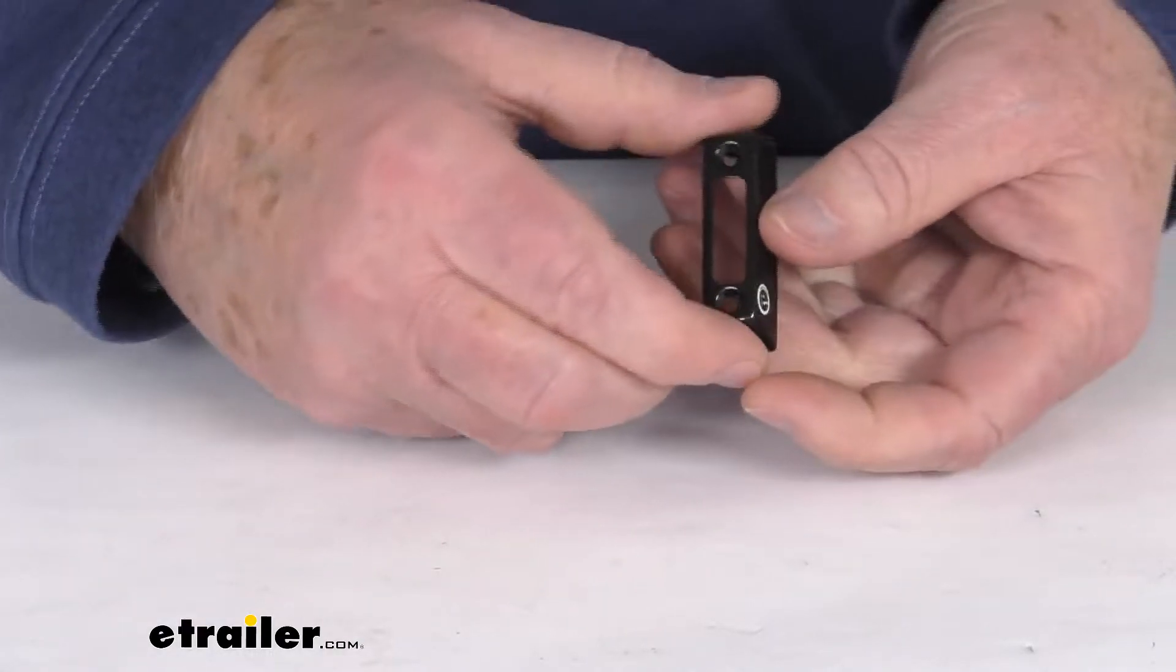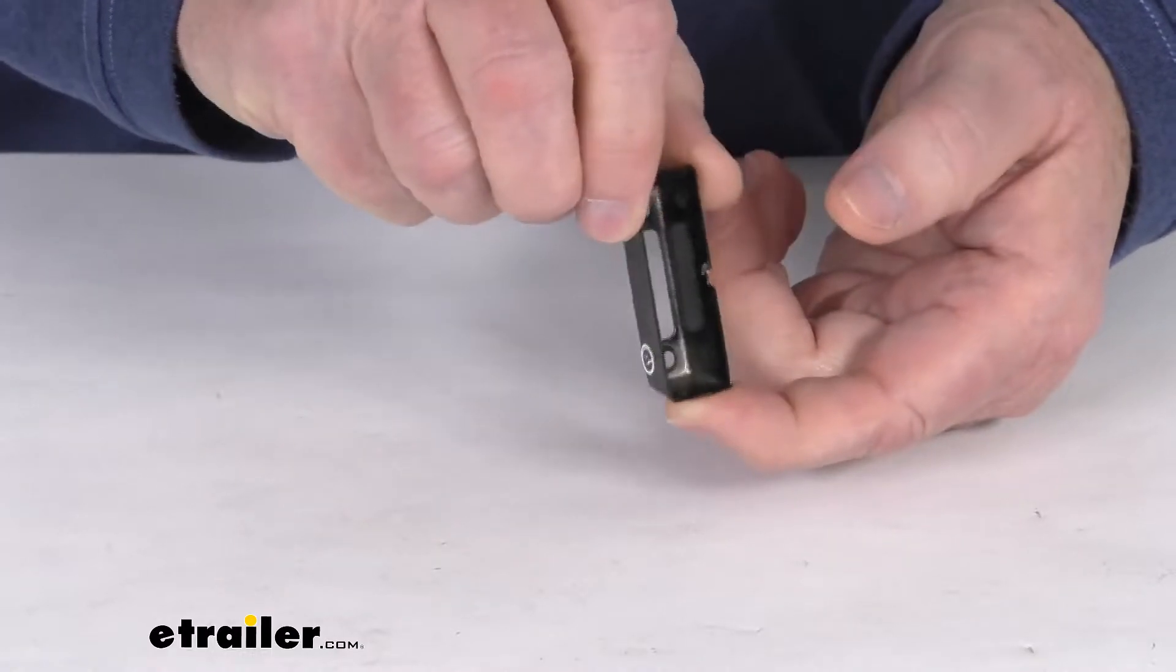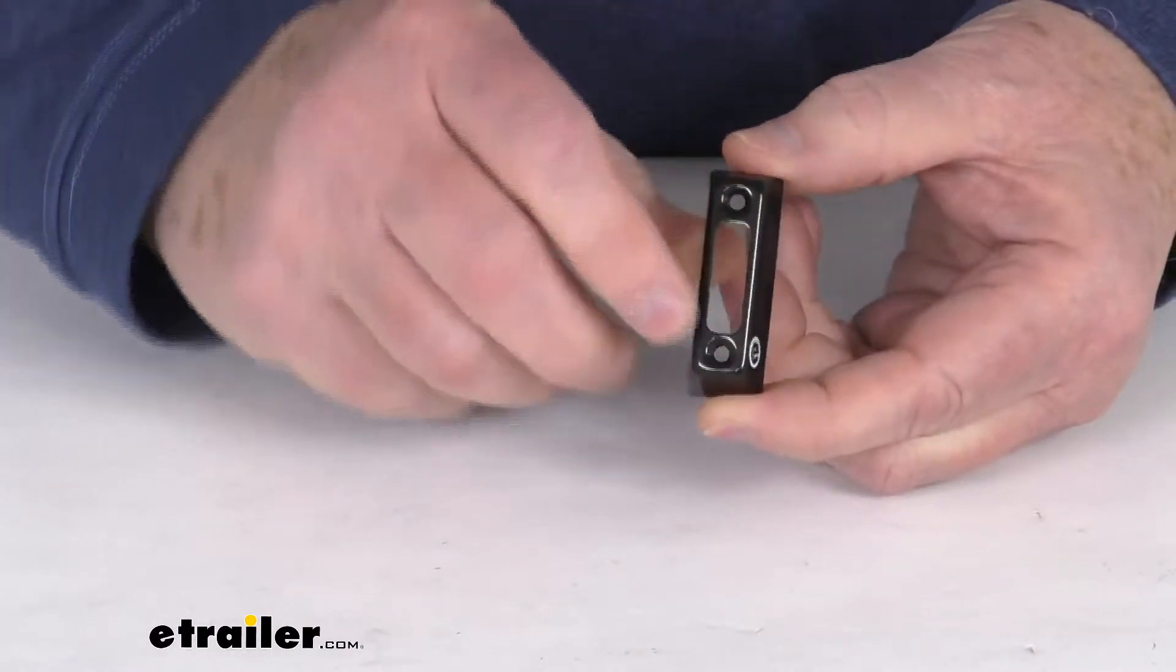Hello everybody, this is Jeff at eTrailer.com. Today I'm going to take a look at this black vertical mounting cover for the TecNiq Mini LED Accent Light.